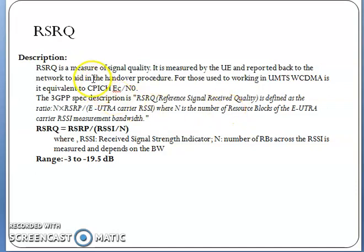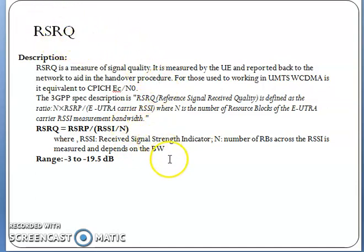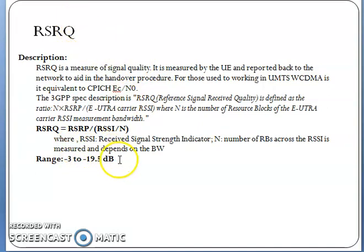In 3G, quality is measured through Ec/N0. In 4G, quality is measured through RSRQ. In 2G, quality is measured through Rx quality. So to summarize: RSRQ is the Reference Signal Received Quality, range is from −3 to −19.5 dB, formula is RSRQ = (N × RSRP) / RSSI, and it represents the quality of the signals.